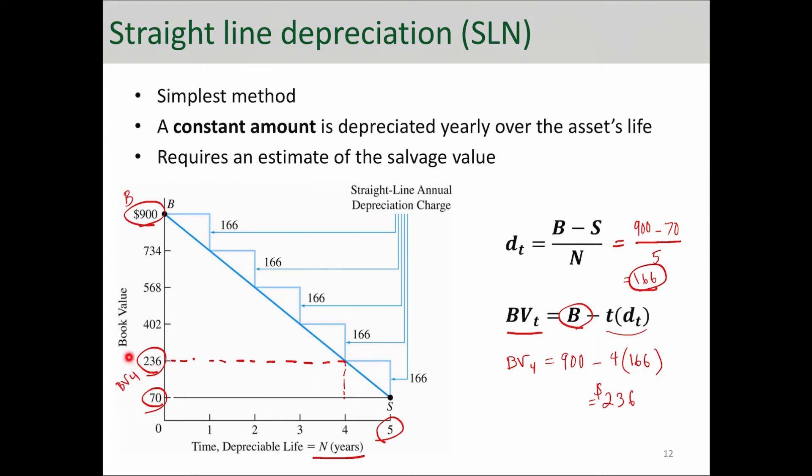Book value at the end of year four is the amount that remains to be depreciated. It is the undepreciated portion of the cost basis. So it's the simplest depreciation method.